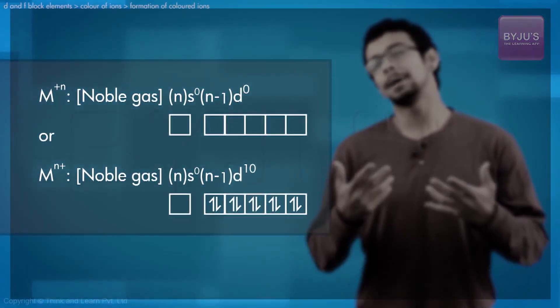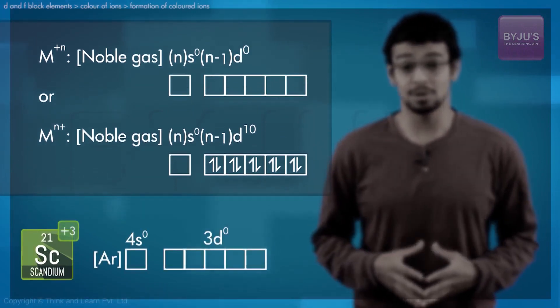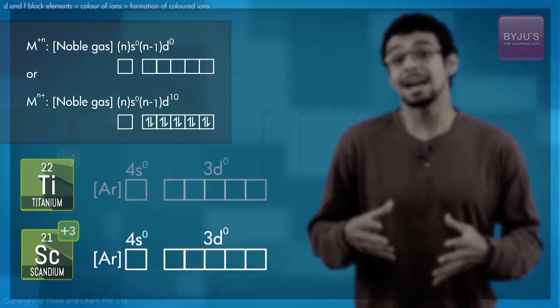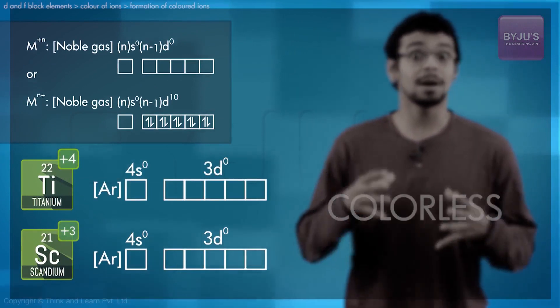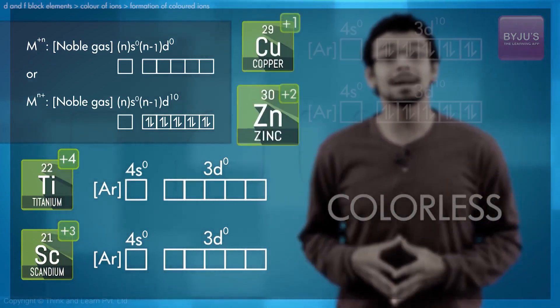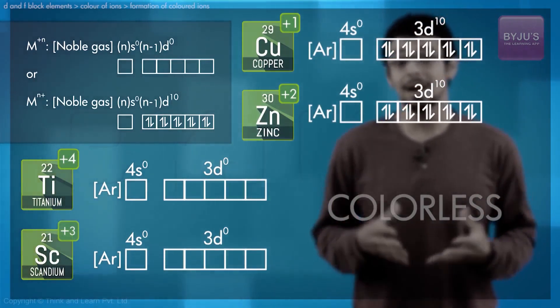Which is why scandium 3+ ions or salts of scandium 3+ ions, Ti4+ ion salts are colorless and Cu+ and Zn2+ salts are colorless.